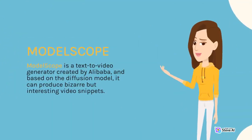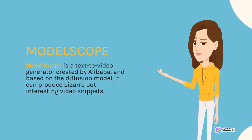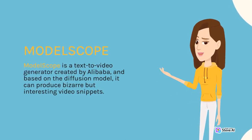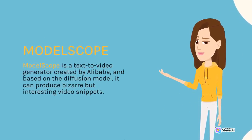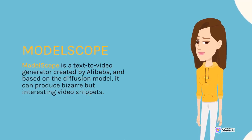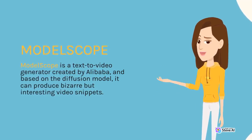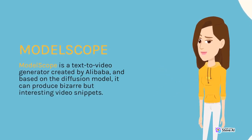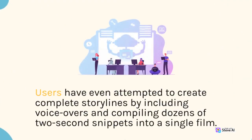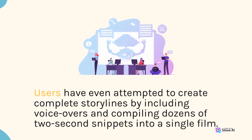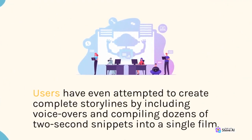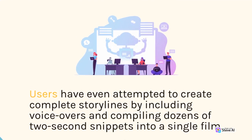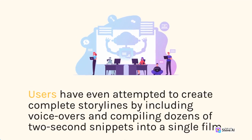ModelScope is a text-to-video generator created by Alibaba, and based on the diffusion model, it can produce bizarre but interesting video snippets. Users have even attempted to create complete storylines by including voiceovers and compiling dozens of two-second snippets into a single film.